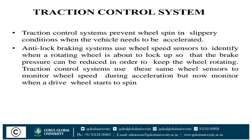Another safety feature is the traction control system. Traction control prevents wheel spin in slippery conditions when the vehicle needs to be accelerated. The anti-lock braking system uses wheel speed sensors to identify when a rotating wheel is about to lock up, so that brake pressure can be reduced to keep the wheel rotating. The traction control system uses the same wheel sensors to monitor wheel speed during acceleration and detect when a wheel starts to spin.